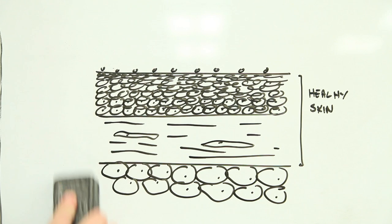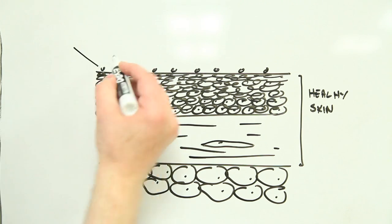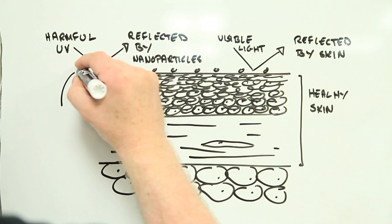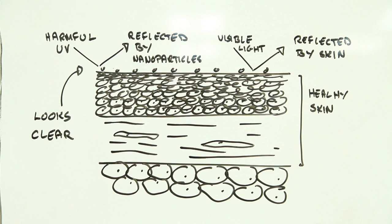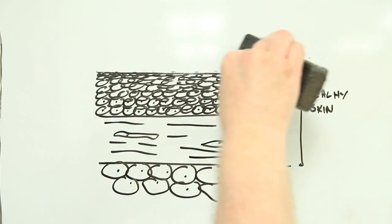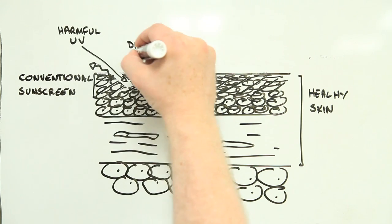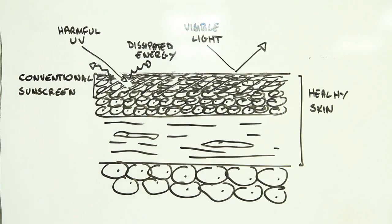Number two: nanoparticles in sunscreens work by reflecting harmful ultraviolet light away from your skin while allowing visible light through. Because of this, they create a barely visible protective barrier, which is great if you'd rather not look like you've just been whitewashed. What's more, they protect you as soon as they've been applied, unlike many of the more conventional sunscreens that need time to settle into your skin before they're fully effective.